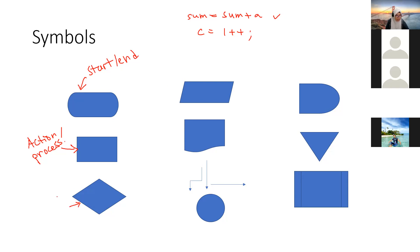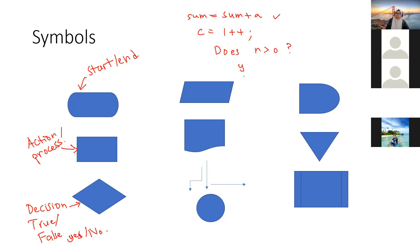The diamond symbol is for decision — whether something is true or false, yes or no. For example, the question might be: 'Does it bigger than zero?' Is it yes or no? If yes, it goes one way; if no, it goes another. You can have branches going left or right depending on your computation. If it is true, it goes to the next process; if false, it goes to a different process.